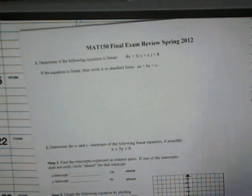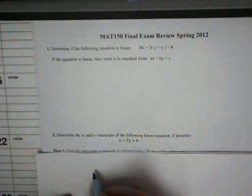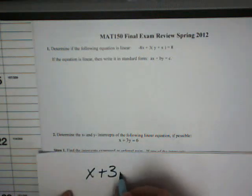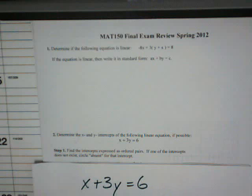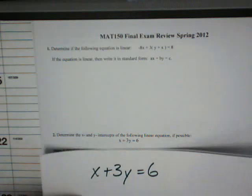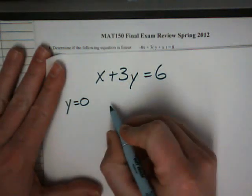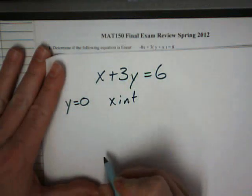Let's see what the next question is here. Determine the x and y intercepts of the following linear equation. Find the intercepts expressed as ordered pairs. If one intercept does not exist, circle absent. So we want to find the x and y intercepts. And to do that, you plug a 0 in for y to find the x-intercept.